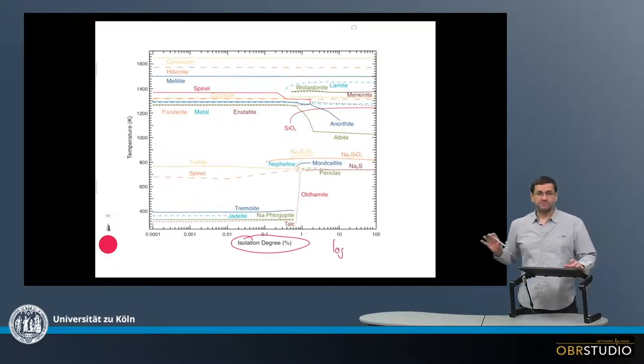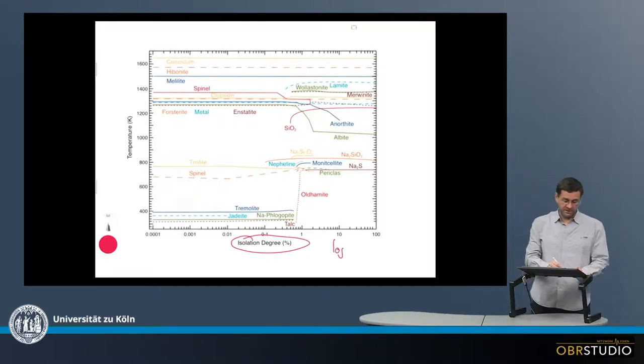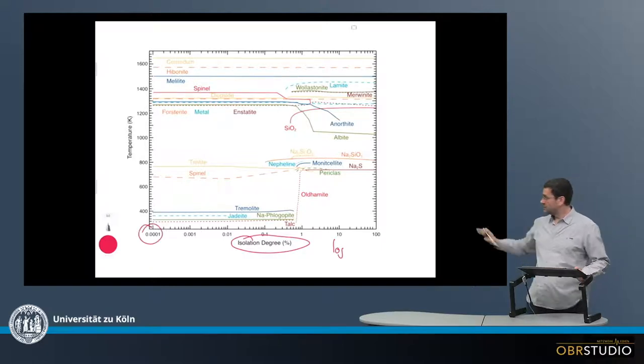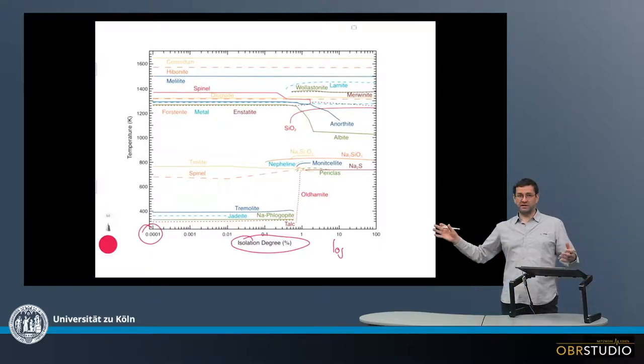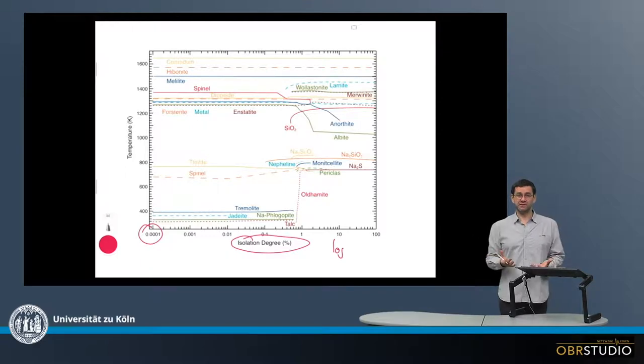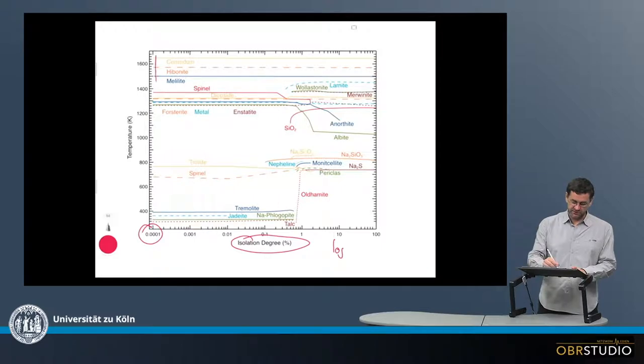Now let's start with a small isolation degree down here. This small isolation degree basically equals to an equilibrium condensation. So this is what you observe here is basically an equilibrium condensation.